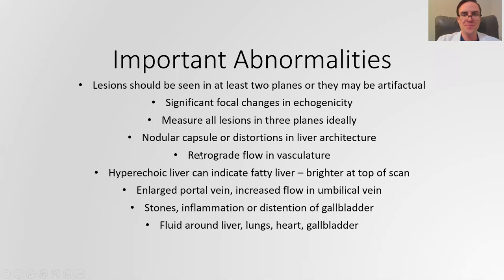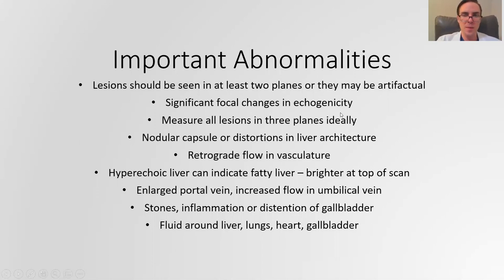Let's review the abnormalities we've talked about. You want to look for any kind of lesions or abnormalities in the liver itself, and make sure you're seeing them in at least two planes — sometimes shadows or odd appearances in one plane are just artifactual reflections from other structures, but if you can see it in two planes it's probably a real physical structure. Lesions can look like significant changes in echogenicity — a part of the liver architecture that's very dark or very light — and those are both important to recognize, image, and measure, ideally in three planes. You also want to examine the capsular structure for distortions, because that can clue you into underlying distortions in liver architecture.